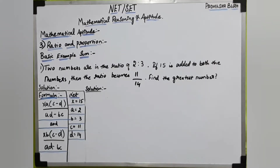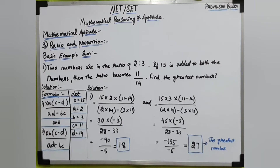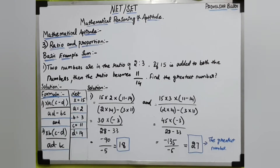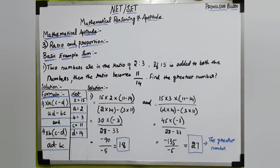If we implement this formula: X into A = 15 into 2 into 11 minus 14, divided by 2 into 14 minus 3 into 11. So 15 into 2 is 30, into minus 3 gives 90 — wait, 30 divided by 28 minus 33. So 90 divided by 5, which is 18.